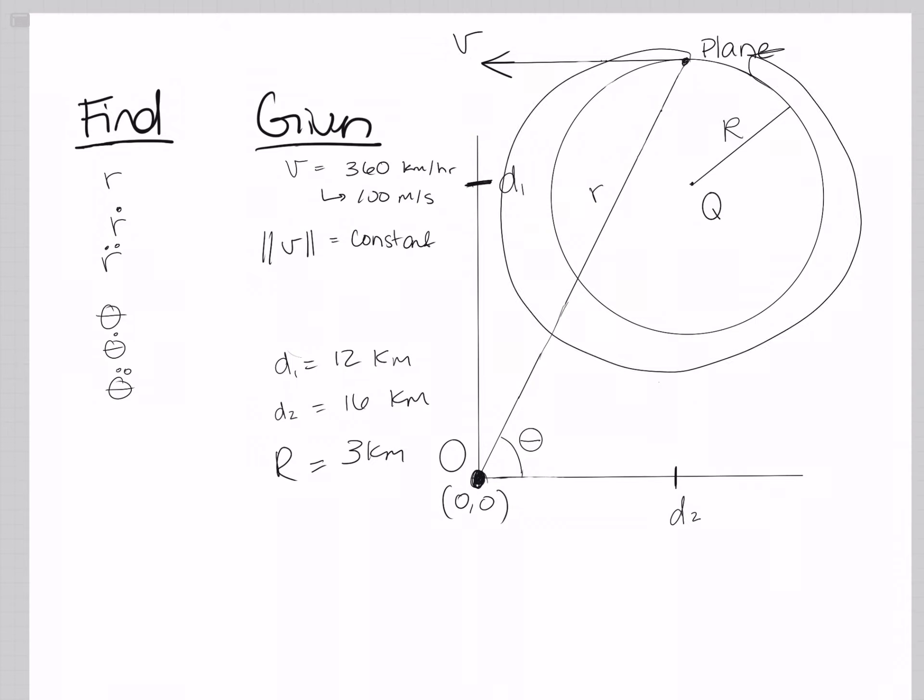Once again we're looking at a plane, and this plane is flying in a circle around point Q, and you are the observer looking at it from point O, or it can be the tower, whatever you want to think it is.